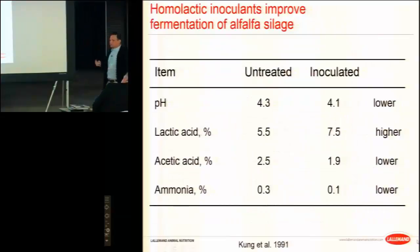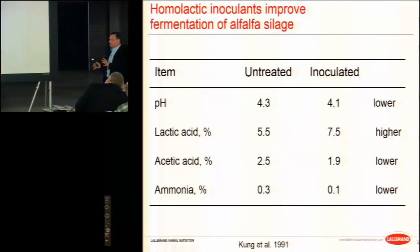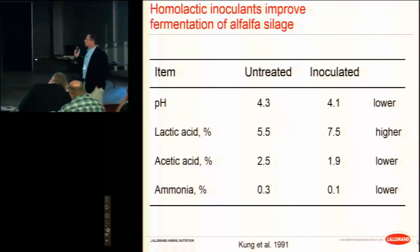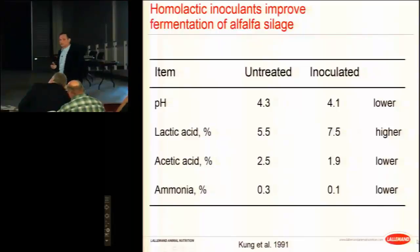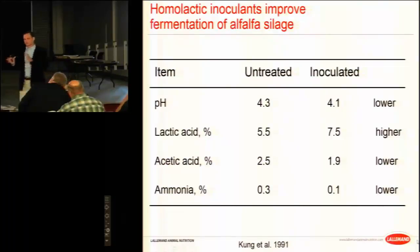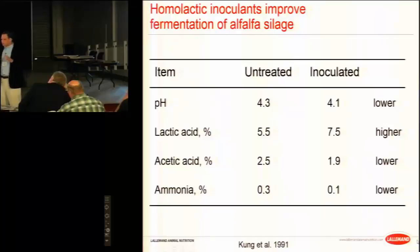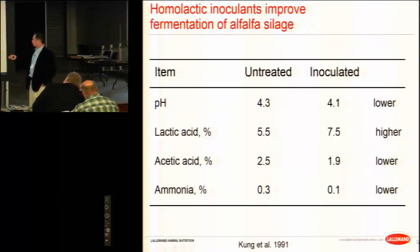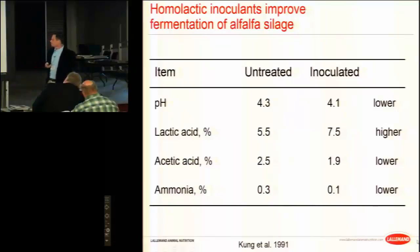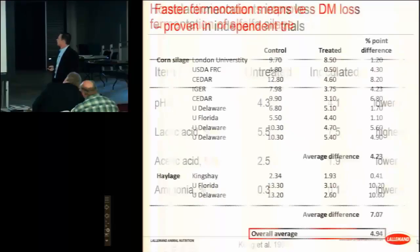Using a homofermentative inoculant, this is the classic fermentation profile you would see. This was a study done in Delaware with my former advisor on alfalfa silage. The inoculated haylage showed lower terminal pH, higher amount of lactic acid, and lower amount of acetic acid - shifting fermentation toward lactic acid as the main product. We were also able to shut down some plant enzymes, especially plant proteases involved in protein degradation, resulting in lower ammonia nitrogen.